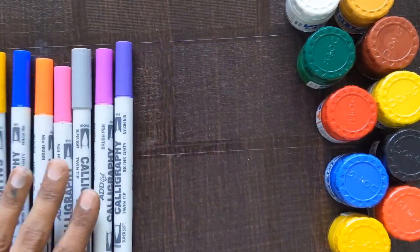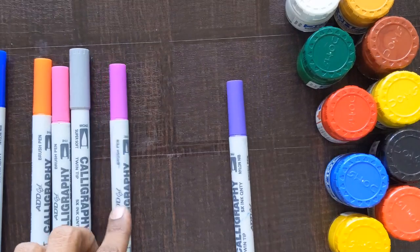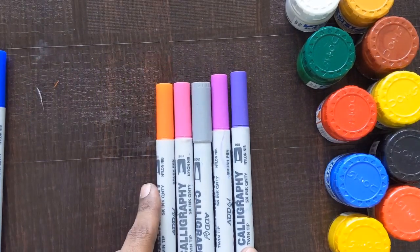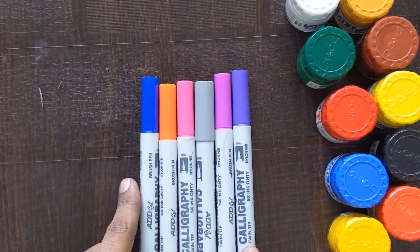Let's learn some colors: violet color, it's a purple color, gray color, pink color, orange color, dark blue color.